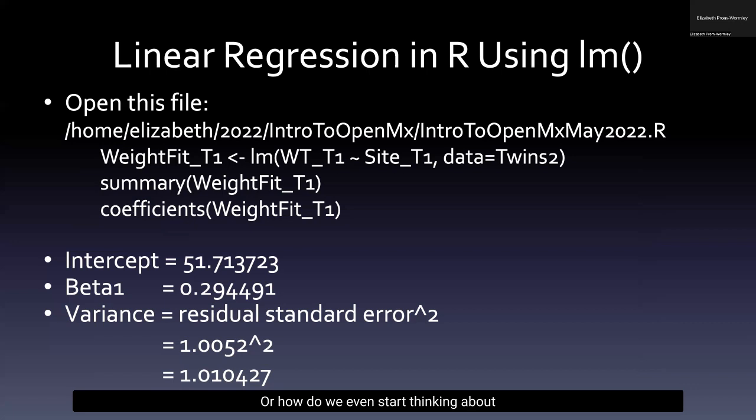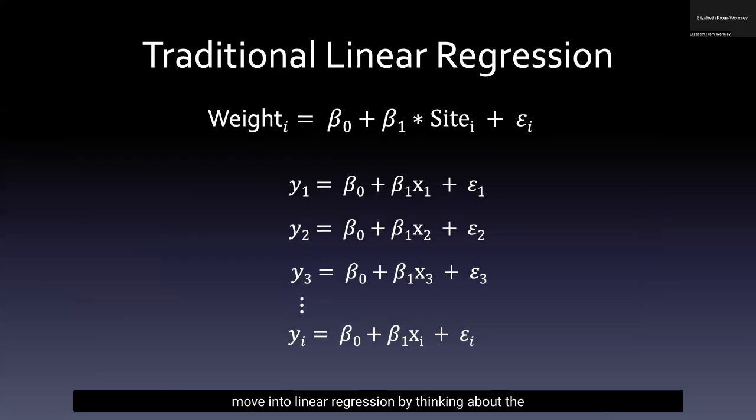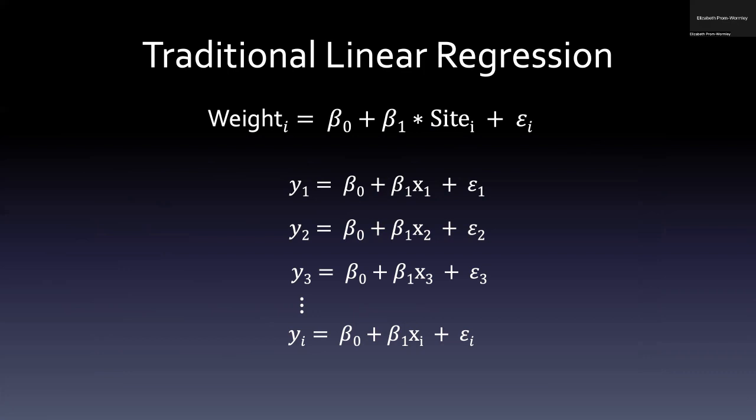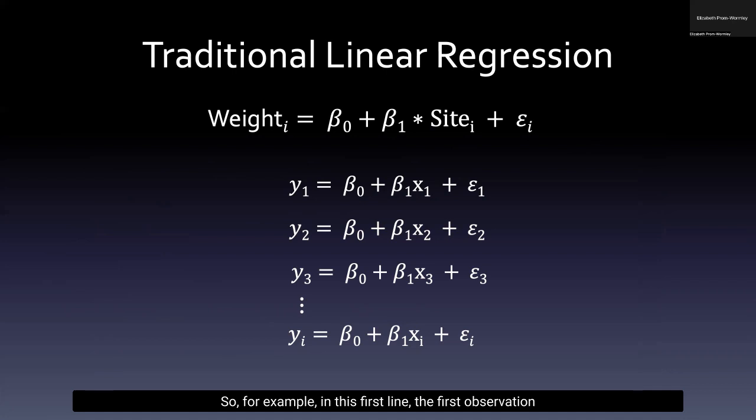How do we even start thinking about beginning to translate this into OpenMX space? It's probably good to take a pause and move into linear regression by thinking about the building blocks underlying a basic linear regression. Here we have a typical regression model equation. Weight equals beta naught plus beta 1, site 1, plus an error term, epsilon. If you break it down, it represents the average contribution of site on the average contribution of weight across all observations in a sample. So for example, in this first line, the first observation of weight is observed as y1, and it's equal to beta naught, or the intercept, plus the effect of site for that first observation as beta 1, x1. And it will have an error term related to it.